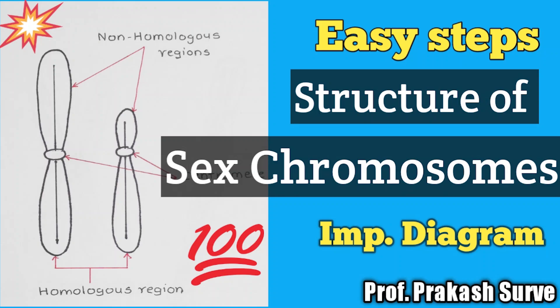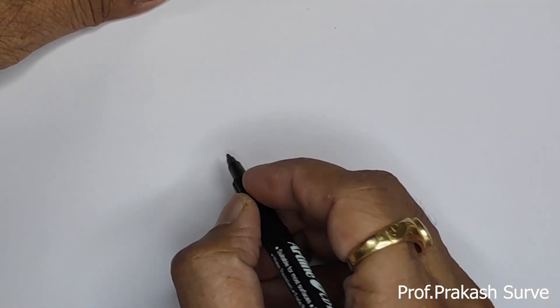Welcome dear student on my channel. Today we will see about the structure of sex chromosomes, that is X and Y chromosomes. This diagram is very easy. This diagram may come for two marks.